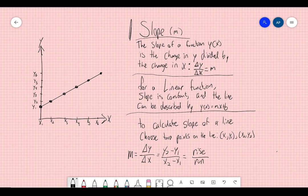The slope of a function y of x, like this, is the change in y divided by the change in x, or we can use deltas, like we learned in 131, and we can have delta y over delta x, that'll equal m.